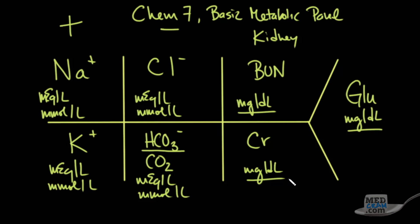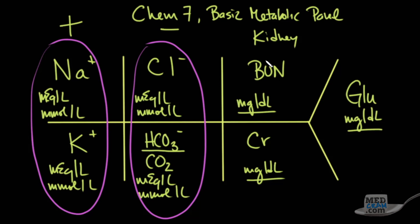Now outside of the United States, sometimes these are expressed differently as well, depending on the units. And so we'll be sticking to milligrams per deciliter. And so I want you to notice that the first column are positive charges, the second column are negative charges, the third column here has to do with the kidney, and again, this is the glucose. And so that's the basic pattern that we're going to be using.